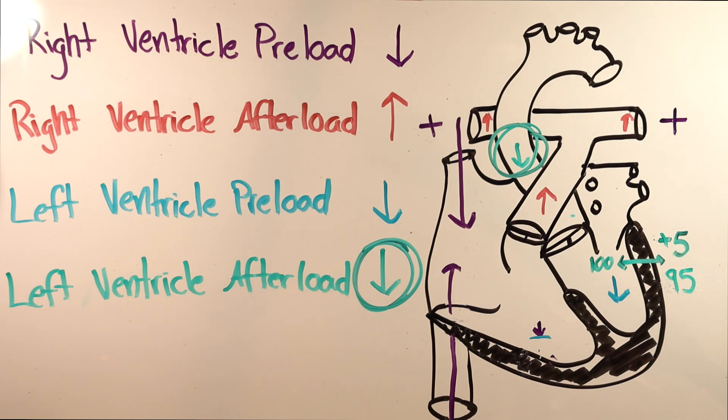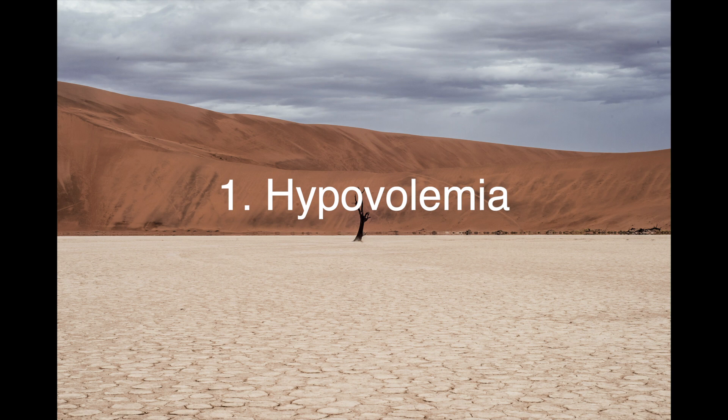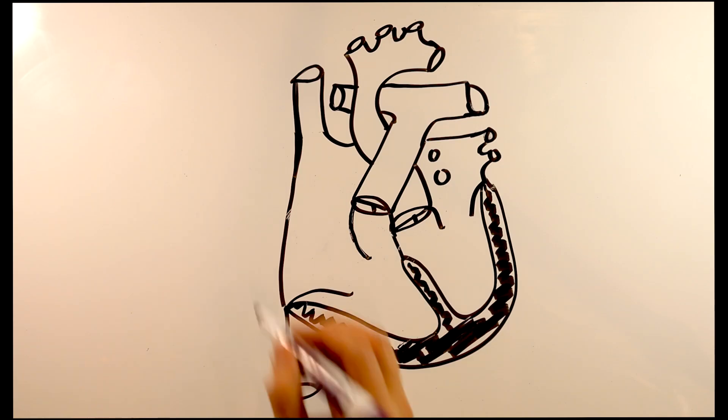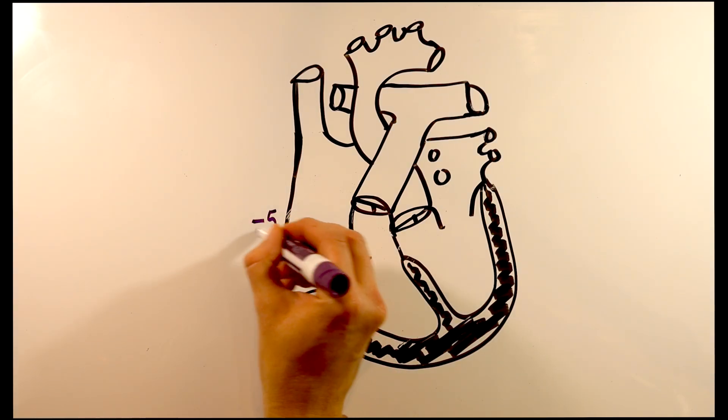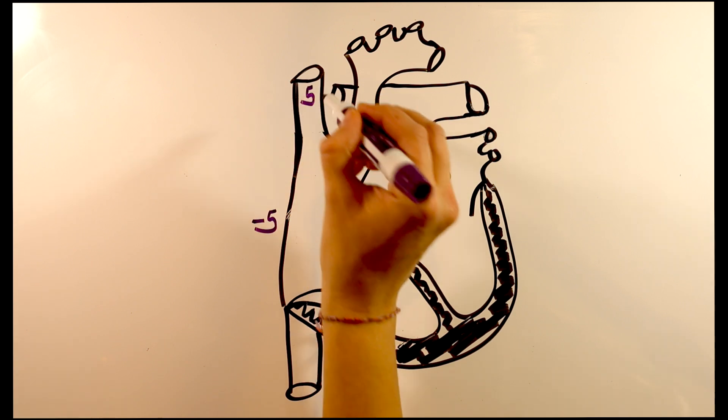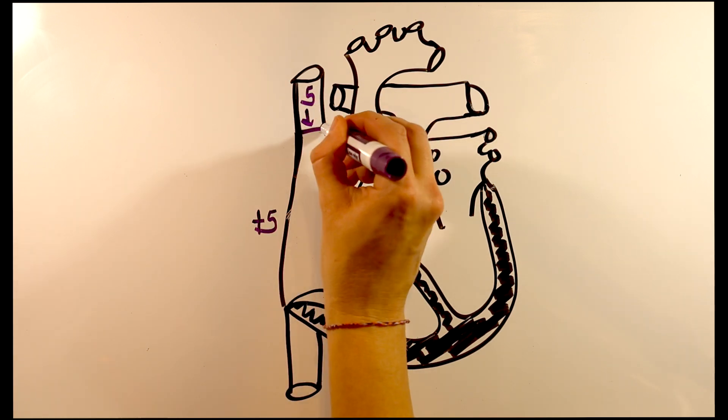When is that not true? Number 1. Severe hypovolemia. If your venous pressure is so low that blood can't flow into the right atrium when the thoracic pressure is positive, it doesn't matter how strong your heart is if there is no blood in it to pump.